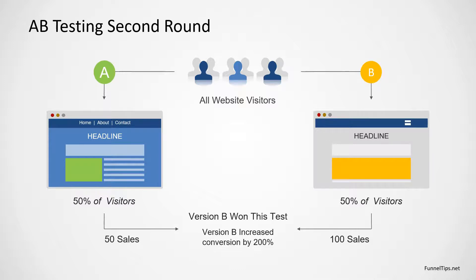In this example, this is our second round of testing — we're going to test another variant. We've got a small video placement as our current version, and now we're looking at a landing page with a large video placement and less text, to see which version performs best. Again, we split the traffic 50% to option A and 50% to option B. The winning or original page is always referred to as the option A page.